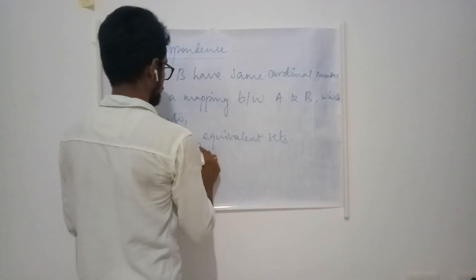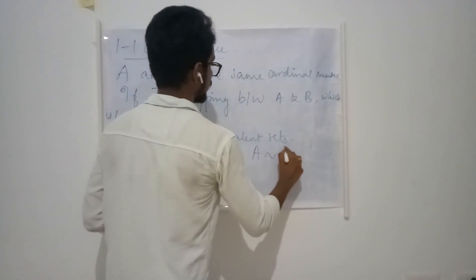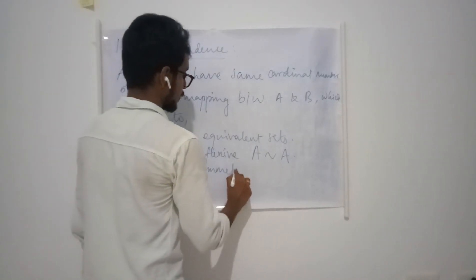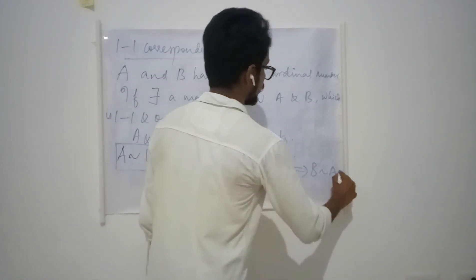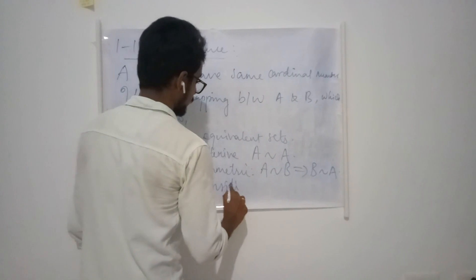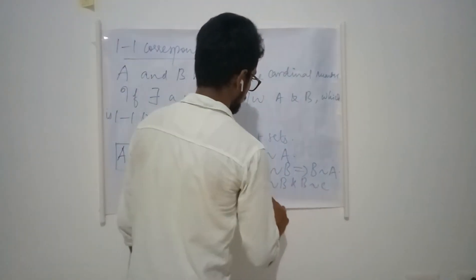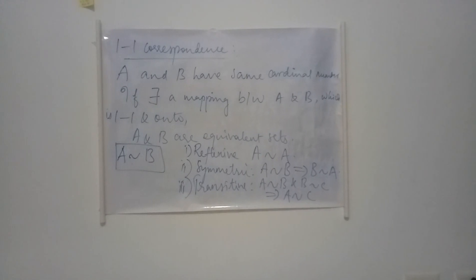This relation has three properties: reflexive — every set is related to itself; symmetric — if A is related to B, then B is related to A; and transitive — if A is related to B and B is related to C, then A is related to C. This relation is spoken in terms of the existence of a mapping.